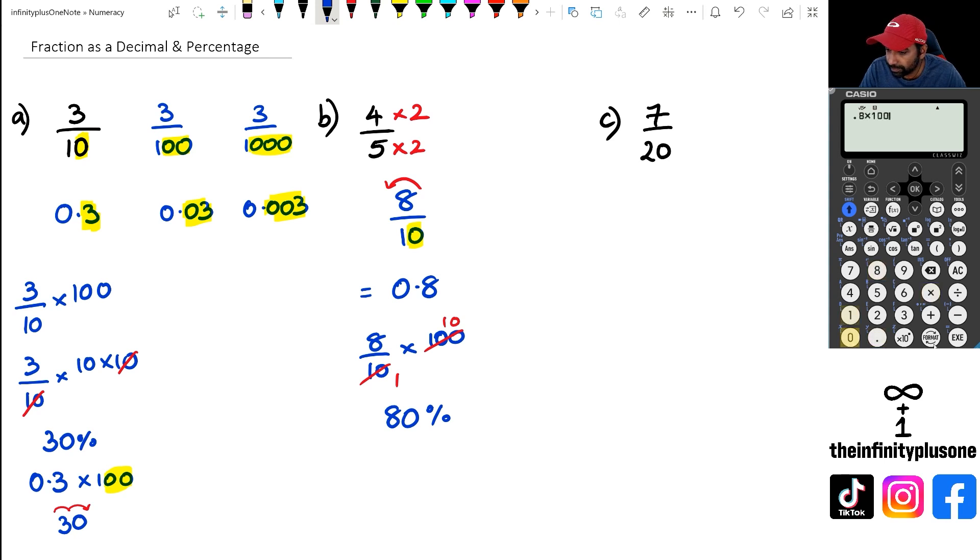So looking at question C, question C we've got 7 over 20. Now you know I could have, if it was 8 over 20, I could have actually divided by 2, which means I would have got 4 over 10. But I've got 7 over 20 here.